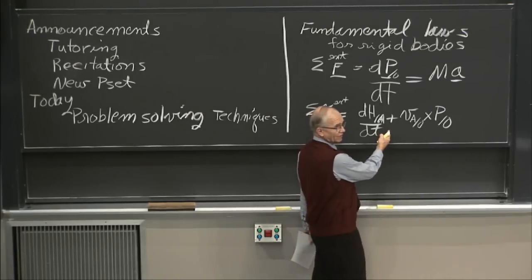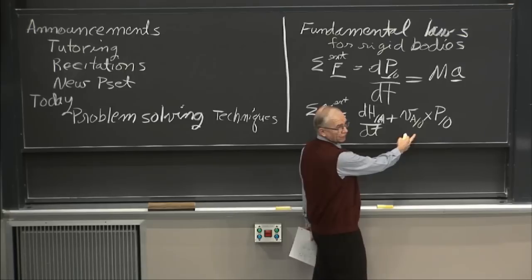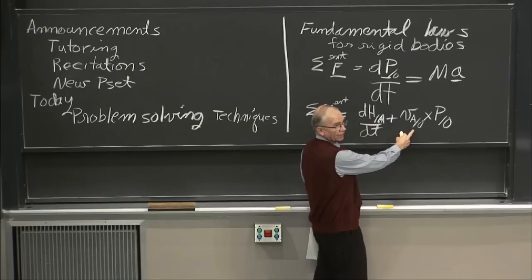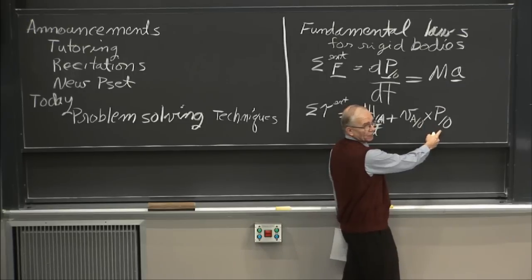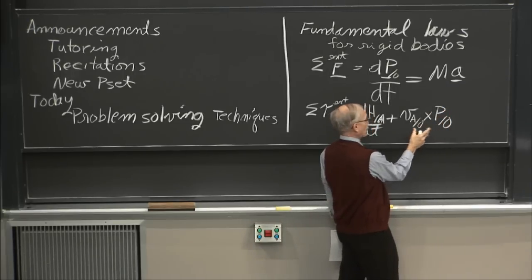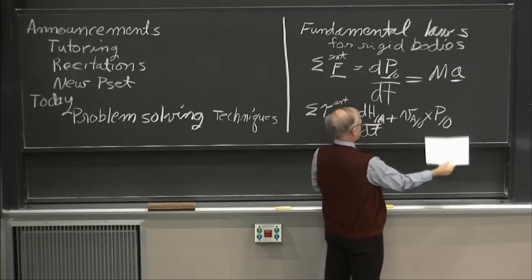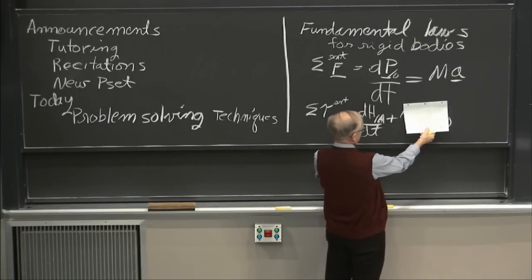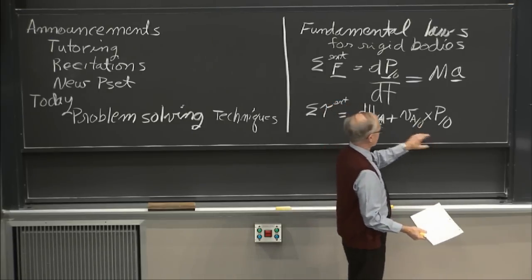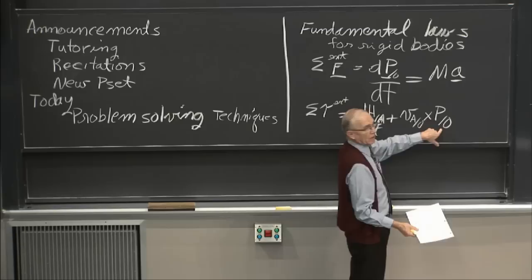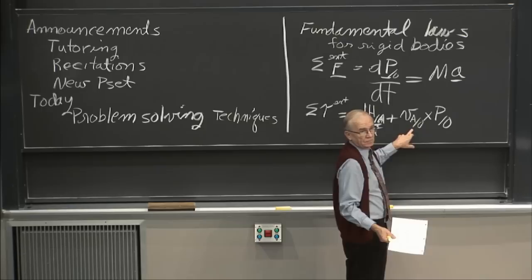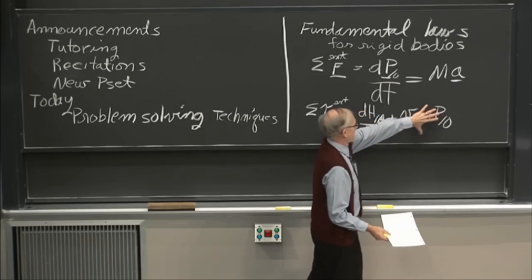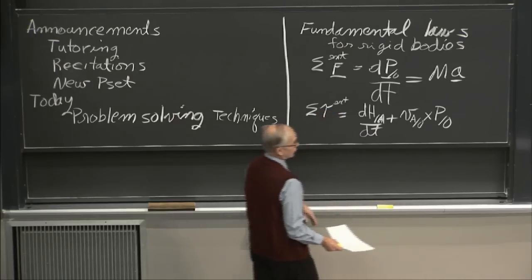We have two special cases of this where the second term goes away. One is when you are at the center of gravity — by definition, the velocity of that point and the momentum are in the same direction, so the cross product disappears. The other is when, for whatever reason, this velocity is parallel to that and the cross product goes to zero. Sometimes the velocity is just plain zero. But sometimes it doesn't, and you just have to put up with it.